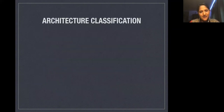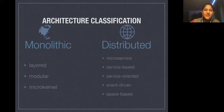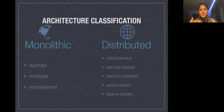First of all, architecture classification. Generally it's done on two broad categories: one is monolithic, and the other one is distributed. When we divide it more, in monolithic there are a few types — you can see layered, modular, microkernel. On the other side, in the distributed part, microservice is one of them. Then service-based, service-oriented, event-driven, and space-based. I'm talking about architectural classification so that at least you should know where microservice lies.